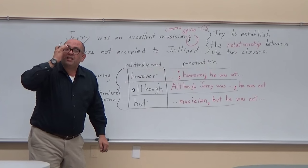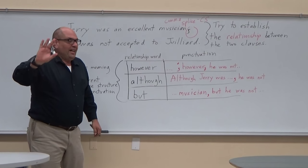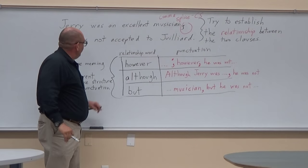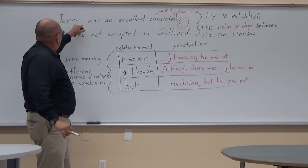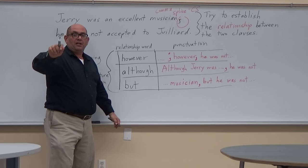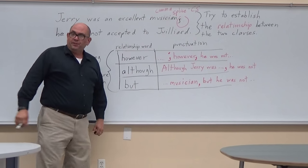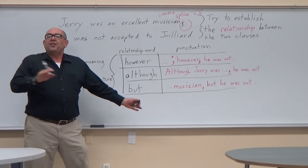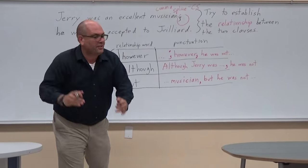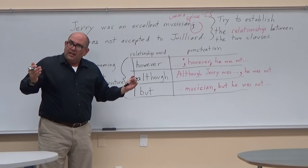The last way is by using a coordinating conjunction — one of the FANBOYS. 'Jerry was an excellent musician, but he was not accepted to Juilliard.' These words establish contrast between the two clauses.